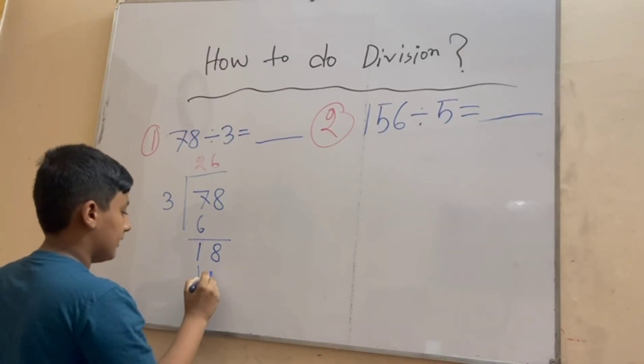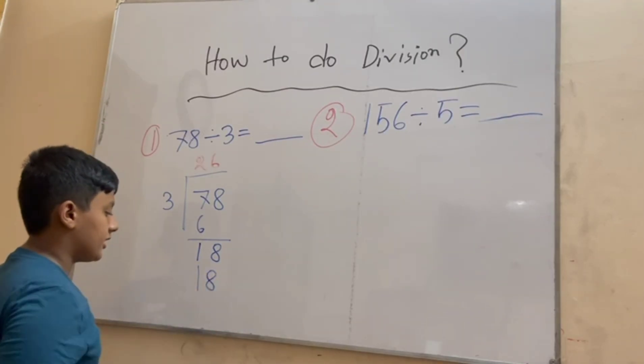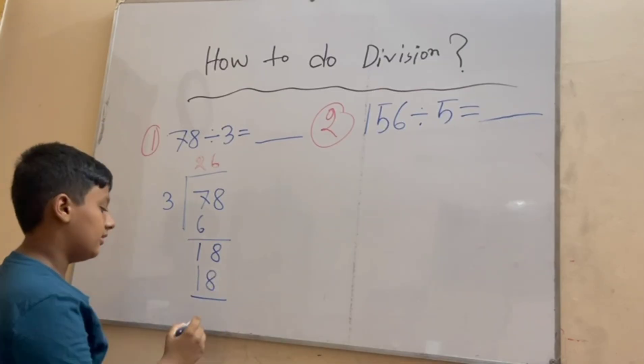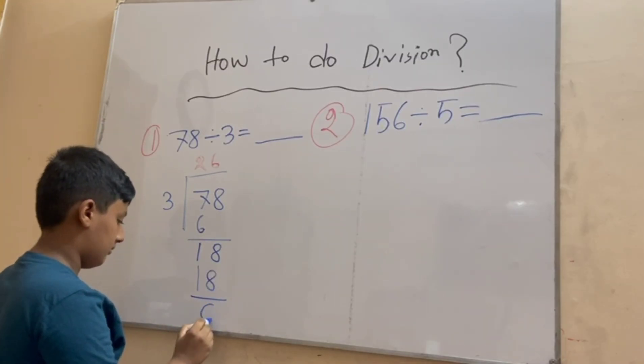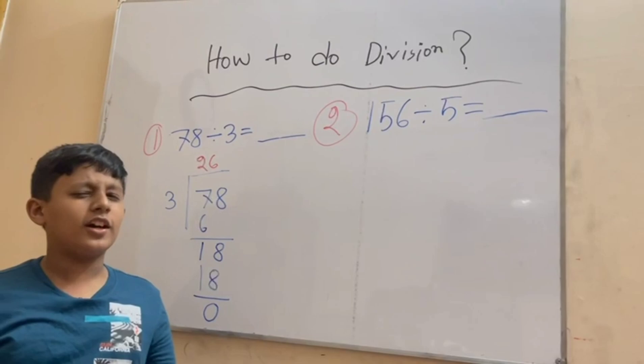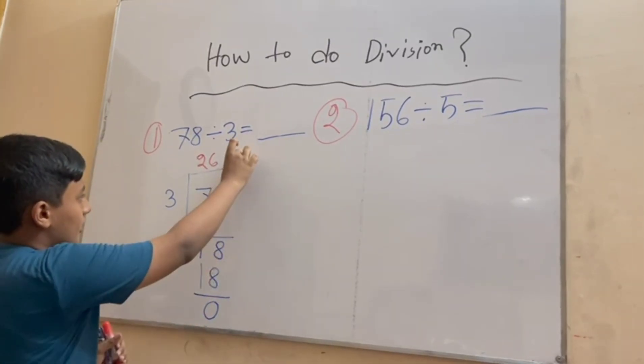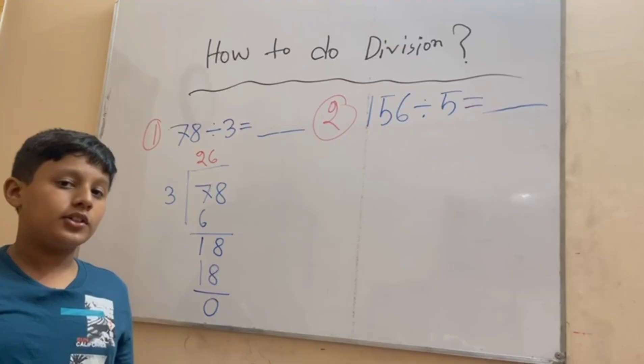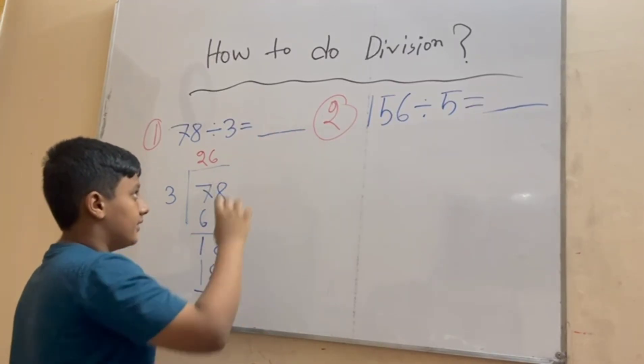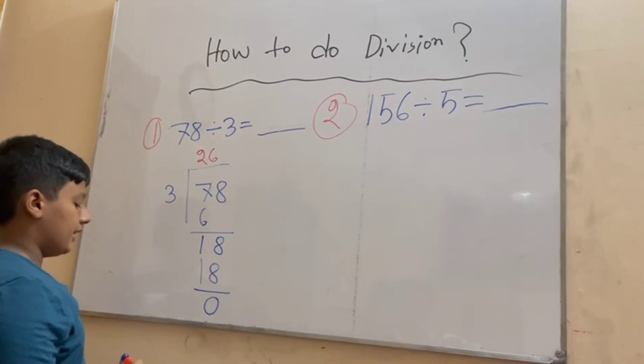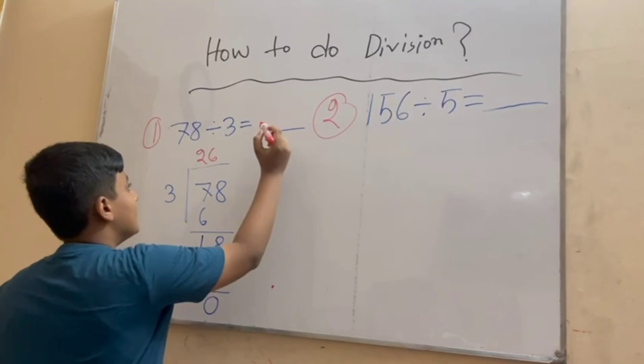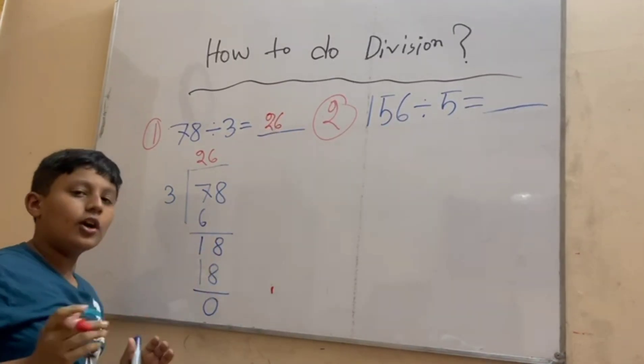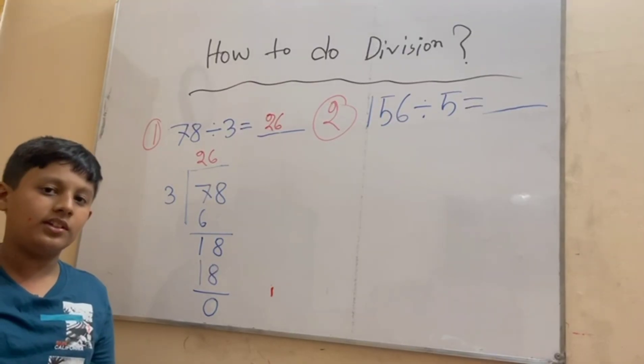Let's do subtraction again: eighteen minus eighteen is zero. We have got our answer which is 26 for this calculation. Now how will we write the answer 26 here? We have to write only 26. It is simple, right? There's no remainder so we won't write any remainder section.